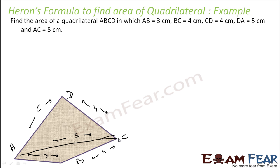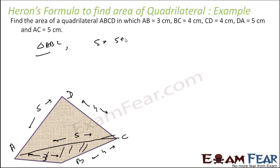We can find the area of the quadrilateral by finding the area of triangle ADC and triangle ABC and adding them. For triangle ABC, S equals (5 plus 4 plus 3) divided by 2, which is 12 divided by 2, that is 6 centimetres.